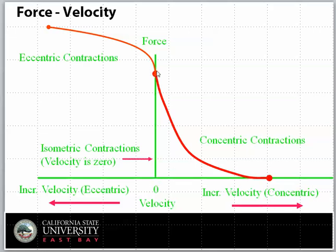Zero velocity is the definition of an isometric contraction because the joint does not move. The relationship between force and velocity for a concentric contraction is very different than the relationship of force and velocity for an eccentric contraction. For a concentric contraction, as the velocity increases, the force decreases.